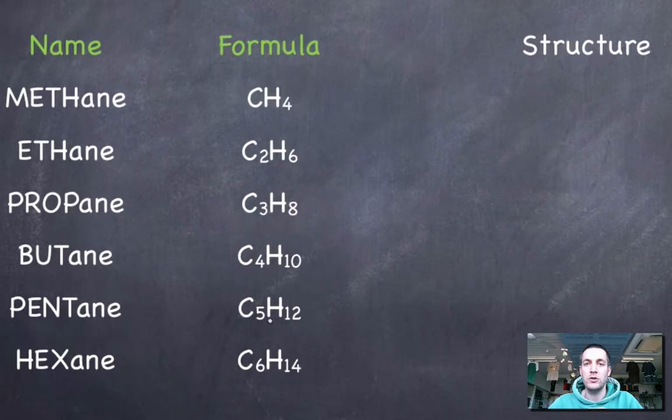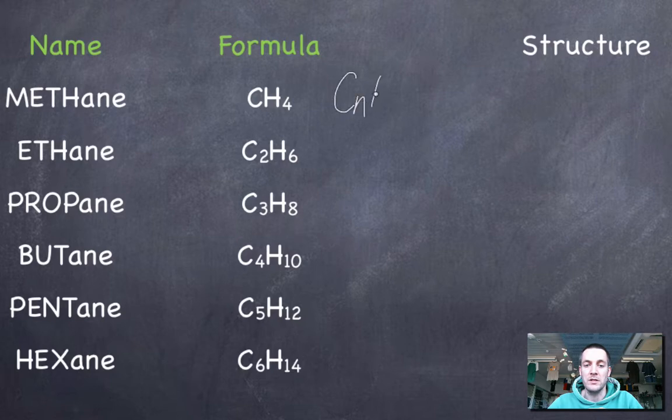Here are the formulas, which you should be able to figure out, considering they all have the general formula CnH2n plus 2. So what's simply happening is that you're multiplying the number of carbons by two and adding two to get the number of hydrogens.